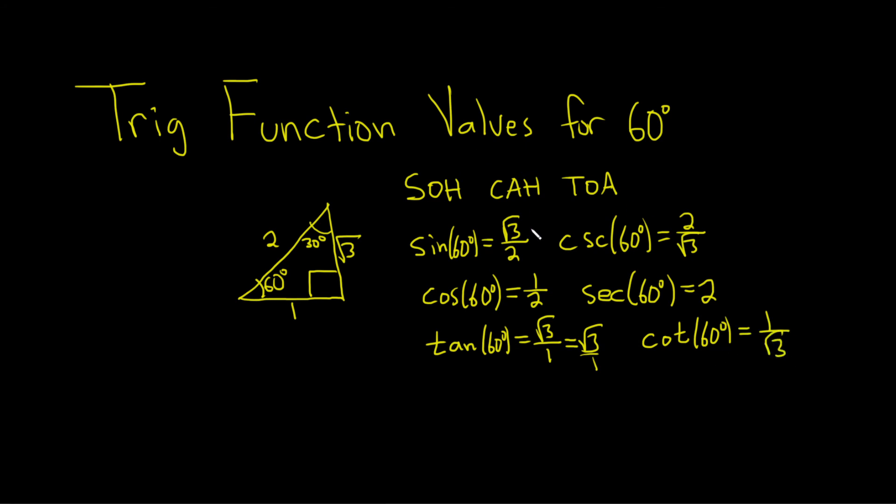So if you ever have to find all of them, you could do this. This is an easy way to do it. Just remember 1, 2, 3, put a square root, 60, 30. If you memorize this triangle, you can also do the ones for 30 degrees as well. I hope this video has been helpful. Good luck.